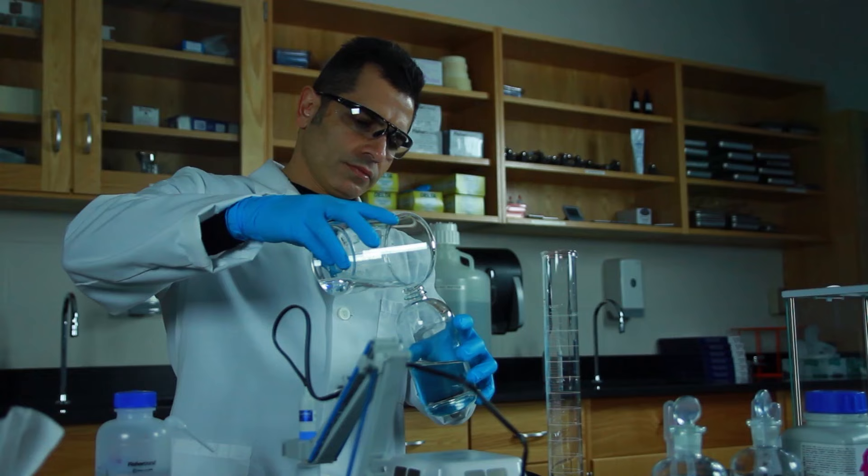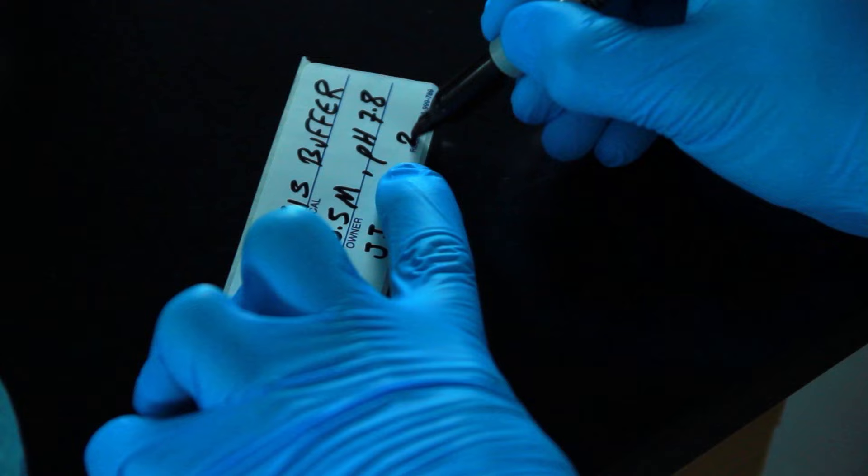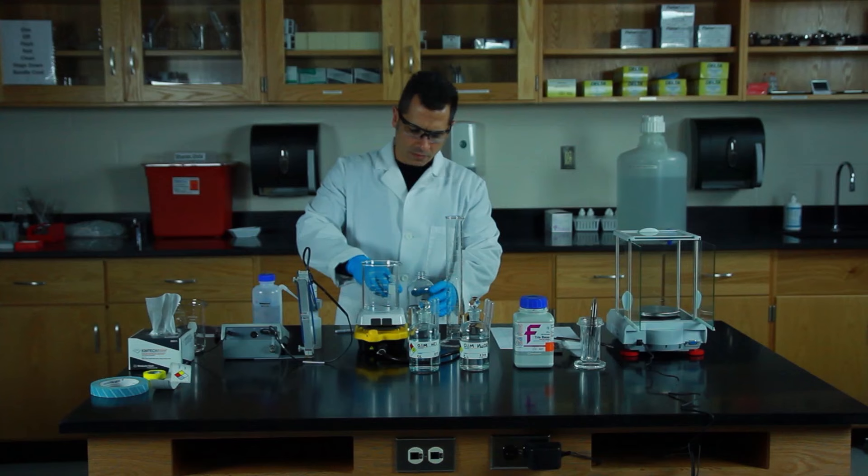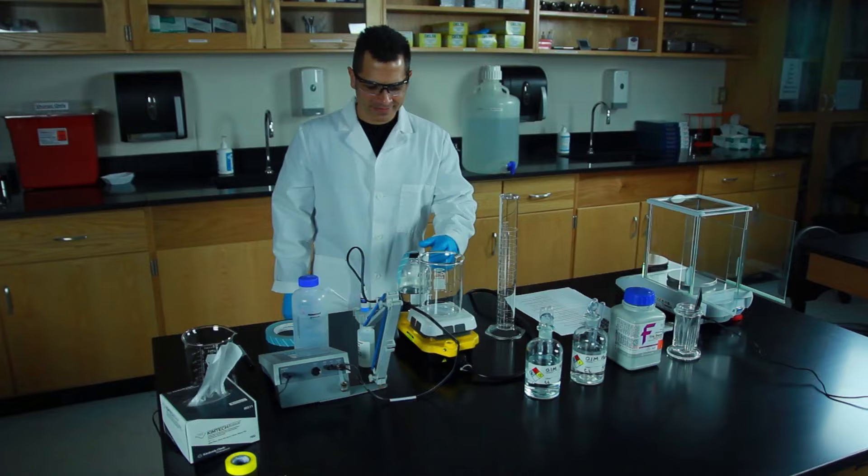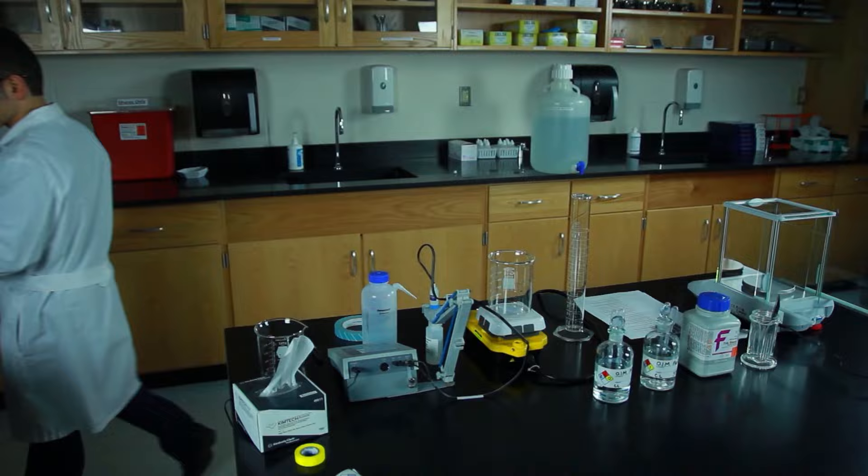Pour the buffer into a bottle and label it with the name of the solution, the pH, the date it was prepared, and your initials. Now our Tris buffer is ready to be sterilized in the autoclave.